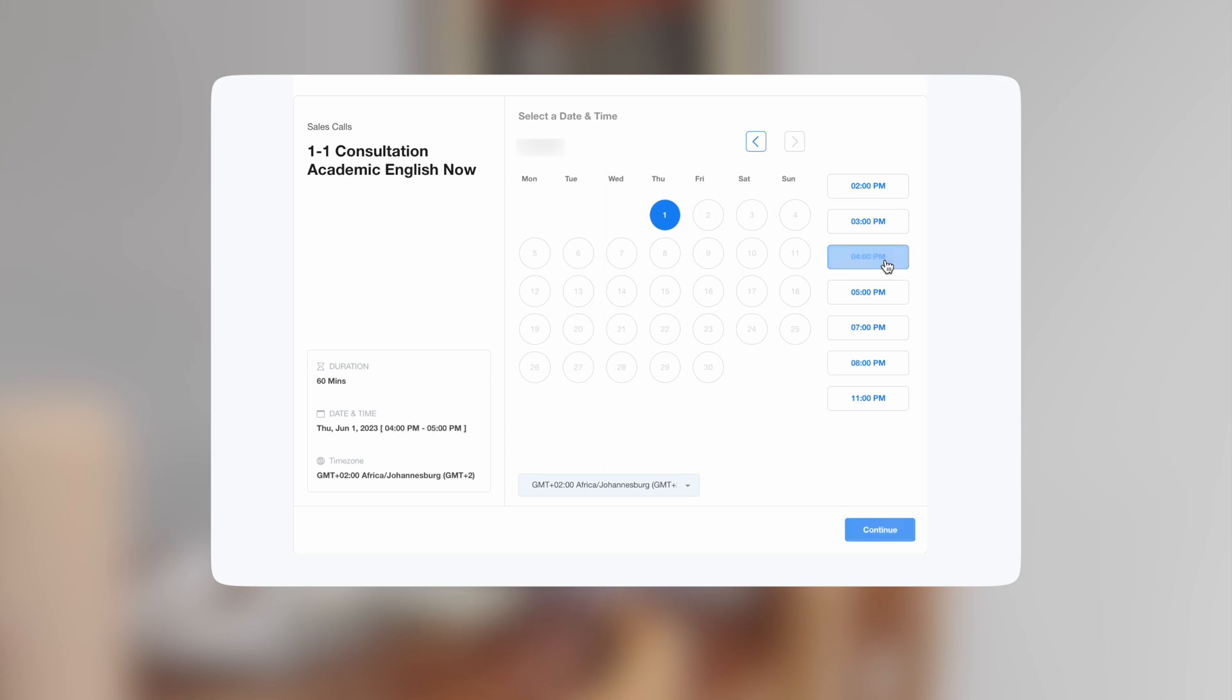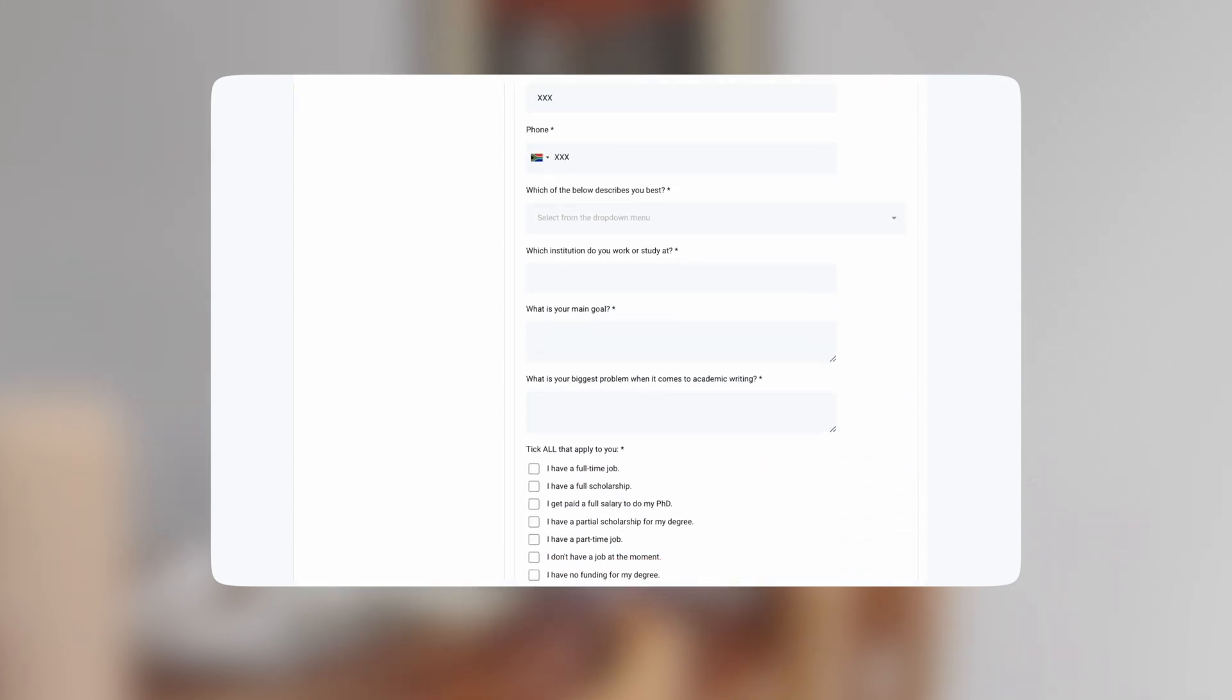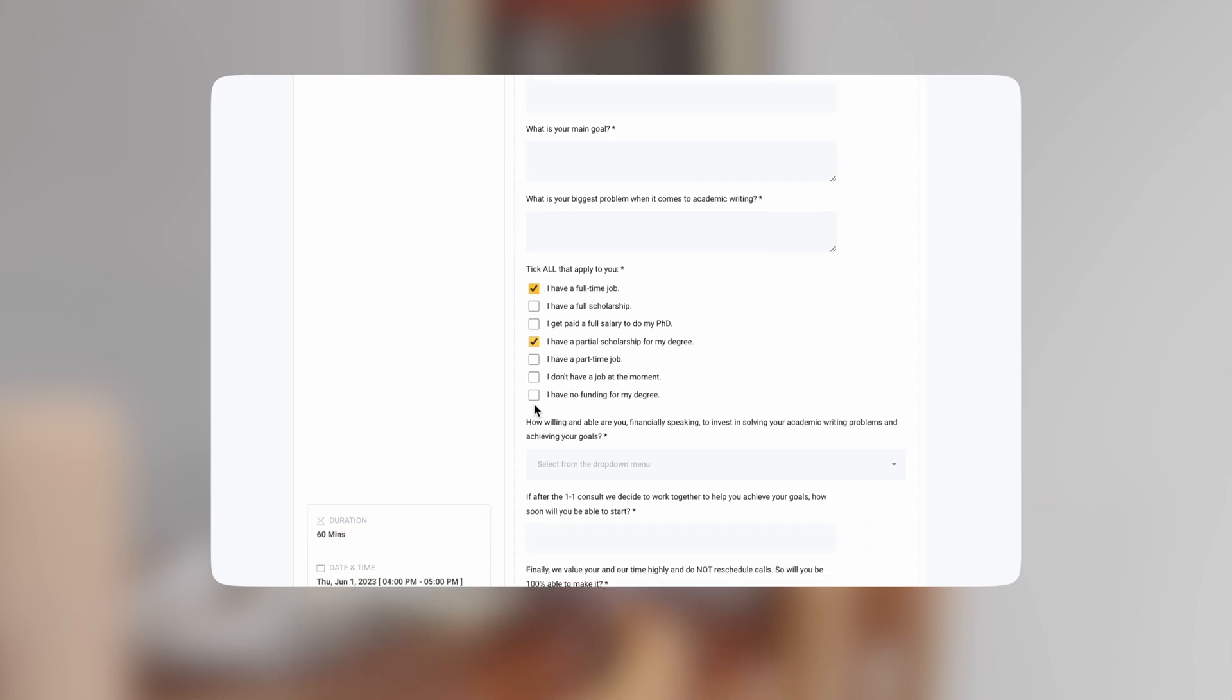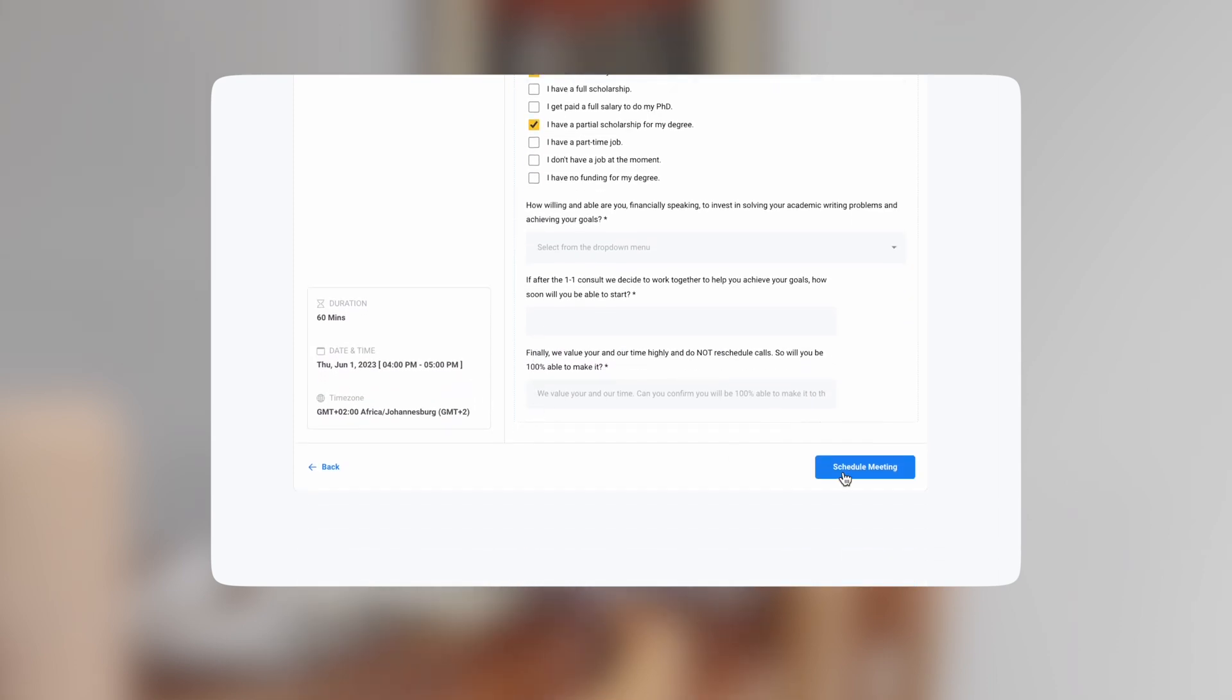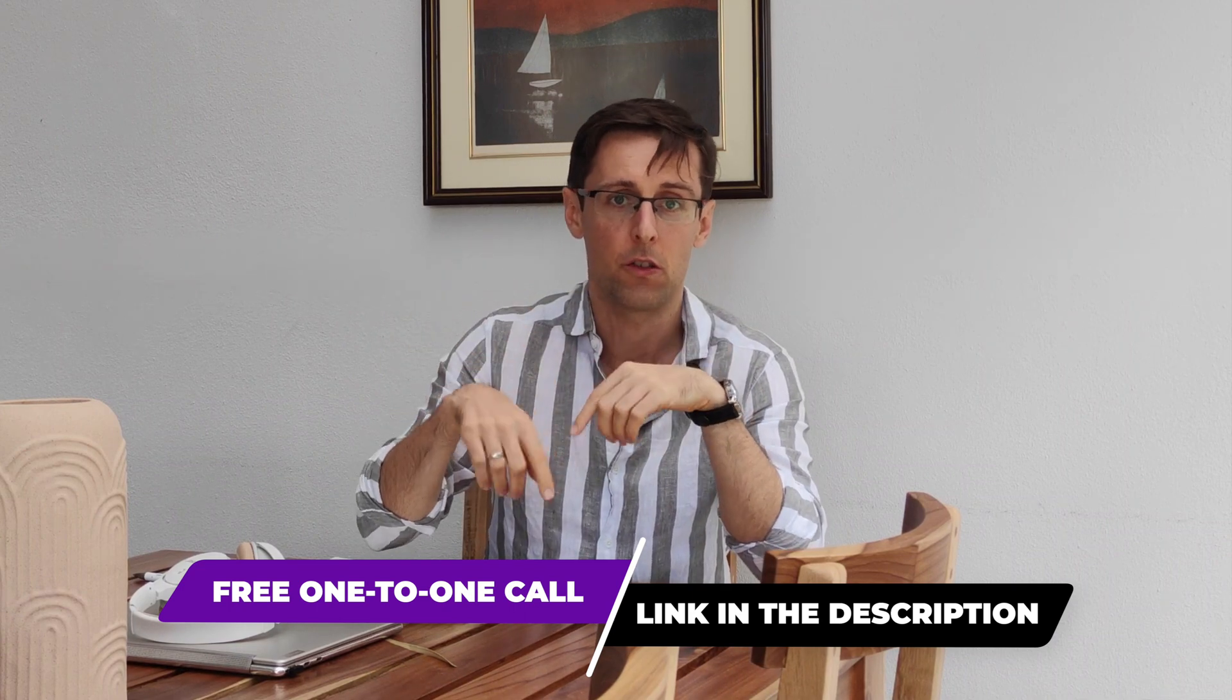Now if you want to work with me personally and help you to write and publish papers in top Scopus-indexed journals, then schedule a free one-to-one consultation with my team where we're going to identify what your biggest challenges are, outline your goals, and then we're going to propose a simple three or four step plan that will take you to those goals with less effort and faster. You can book this consultation right below this video.